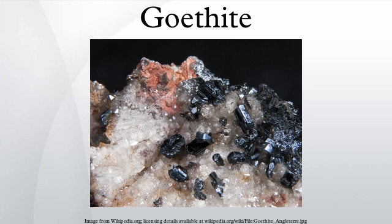Goethite has also been found to be produced by the excretion processes of certain bacteria types. Goethite is found all over the planet, usually in the form of concretions, stalactitic formations, oolites, and reniform or botryoidal accumulations. It is also a very common pseudomorph. It is frequently encountered in swampy areas at the head of spring waters, on cave floors, and on the bottom of lakes and small creeks.